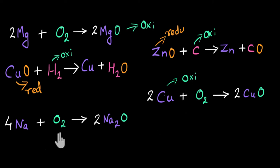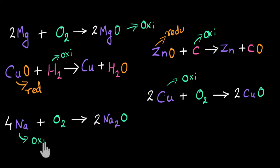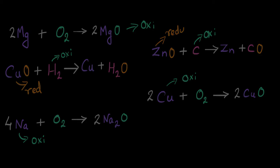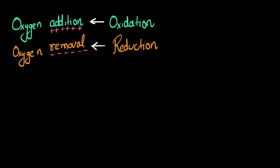In another example, oxygen is getting added to sodium and we get sodium oxide, so sodium is going through an oxidation reaction. So now we have solved our problem. So far we have seen that oxygen's addition is termed as oxidation and oxygen's removal is termed as reduction.